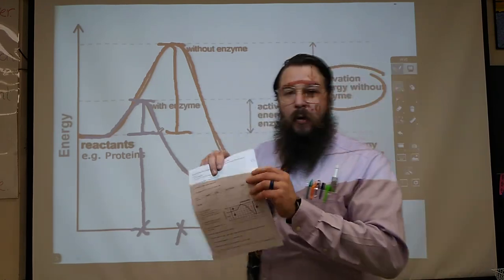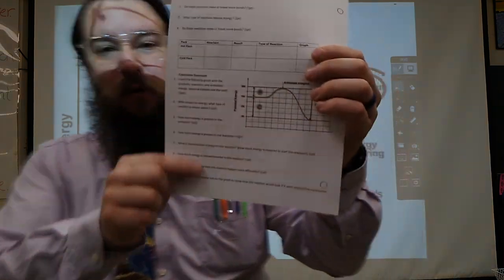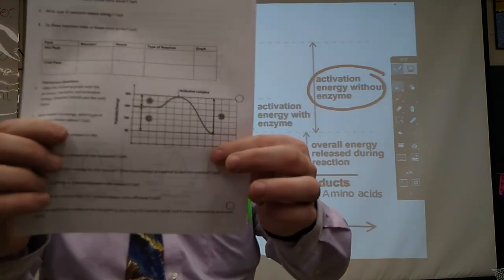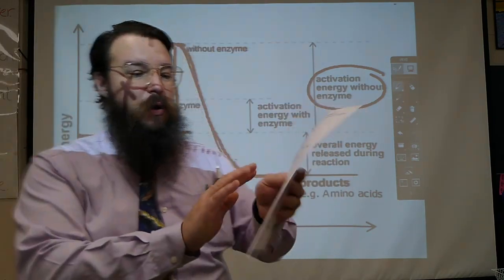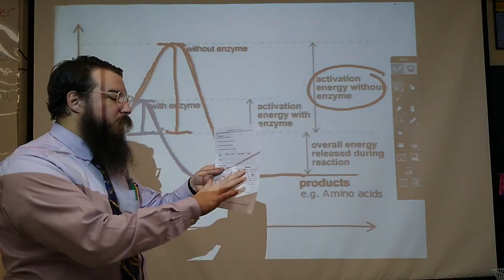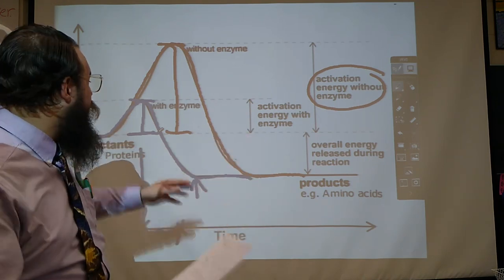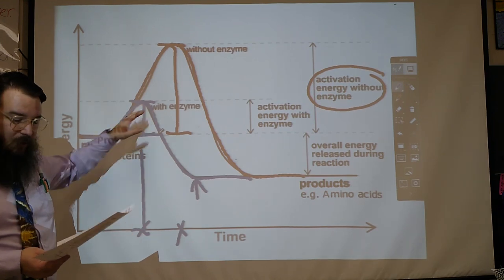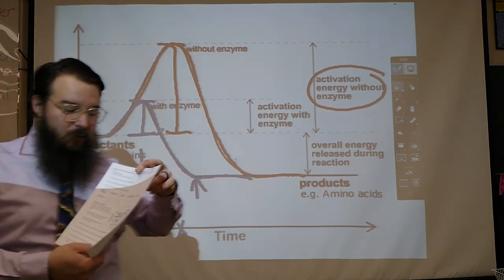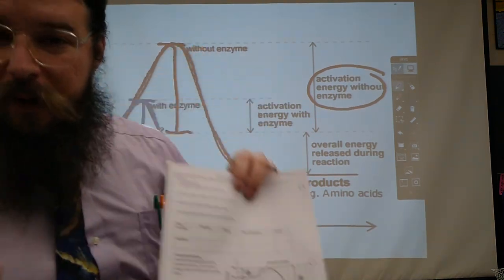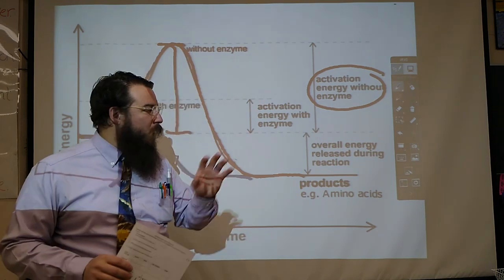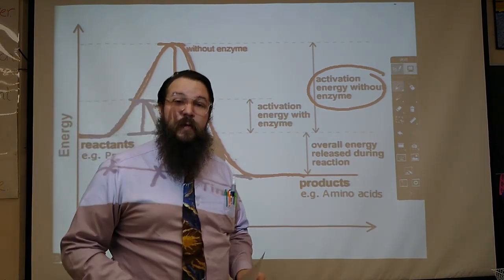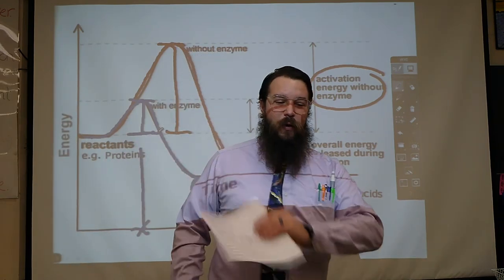Hopefully this helps you understand what we're going for with chemical reactions, energy curves, and enzymes. Now go ahead and answer the conclusion questions at the end of the last lab. You'll notice you've got an energy curve on there — you're going to be drawing hypothetically how this reaction could look with an enzyme. Just make sure it's lower than the one that's already existing. Thanks for watching — let's finish those conclusion questions.